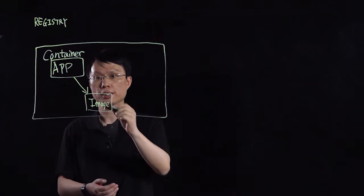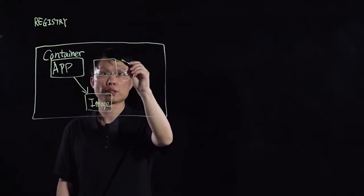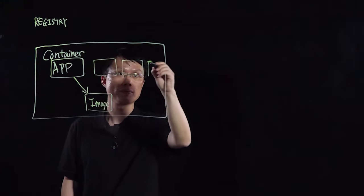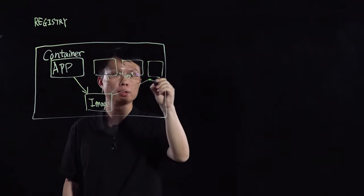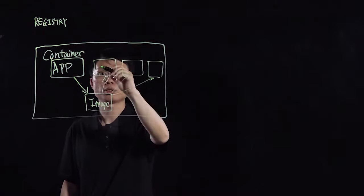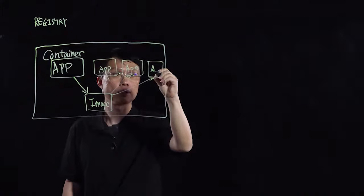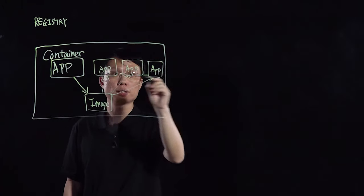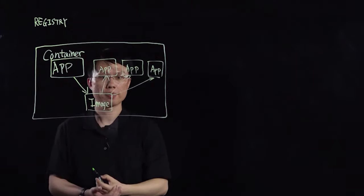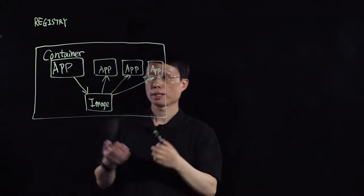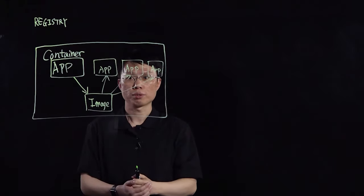Once we get this image, we can spin up multiple instances of container based on this template. The container image is the template for us to spin up multiple instances. These instances are identical to the original one. So container image is a way to help you scale out your application quickly.